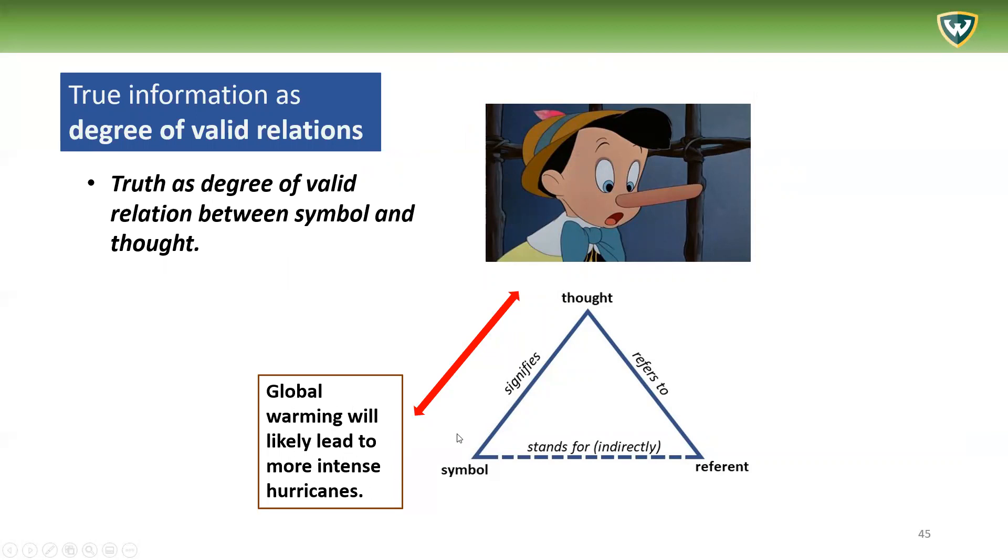So if you read these lines here - 'global warming will likely lead to more intense hurricanes' - and you think of Pinocchio, we clearly have a lack of a true relation. Doesn't match between the symbols and then the mental concept.